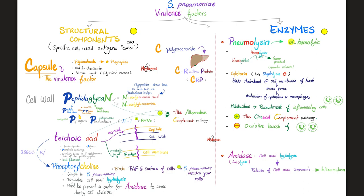Streptococcus pneumoniae possesses C-polysaccharide, which activates your liver and induces it to produce CRP — C-reactive protein. Why do we call it C-reactive protein? Because it was induced by the C-polysaccharide of Streptococcus pneumoniae. It makes perfect sense. By the way, Streptococcus pneumoniae was discovered more than 100 years ago — this stuff is very old.